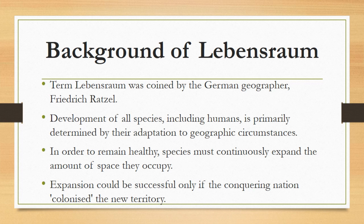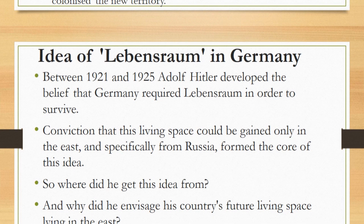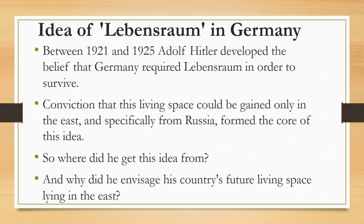He was of the view that species that successfully adapted to one location would spread naturally to others. Indeed, he went on to argue that in order to remain healthy, species must continuously expand the amount of space they occupy. He considered migration as a natural feature of all species. This process also applied to humans, who operate collectively in the form of peoples, with one effectively conquering another. However, according to Ratzel, such expansion could be successful only if the conquering nation colonized the new territory.